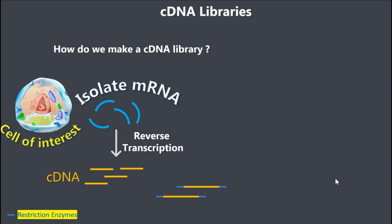We add restriction sites to the ends of the cDNA. After that, we treat the cDNA and the plasmids with restriction enzymes — we are going to cut up our plasmid with the restriction enzyme.